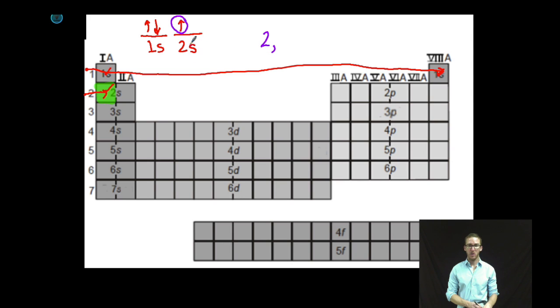Next I need to know what shape orbital it's in. As I look, I notice it's an s-shaped orbital, but remember that corresponds to an angular momentum quantum number of zero.